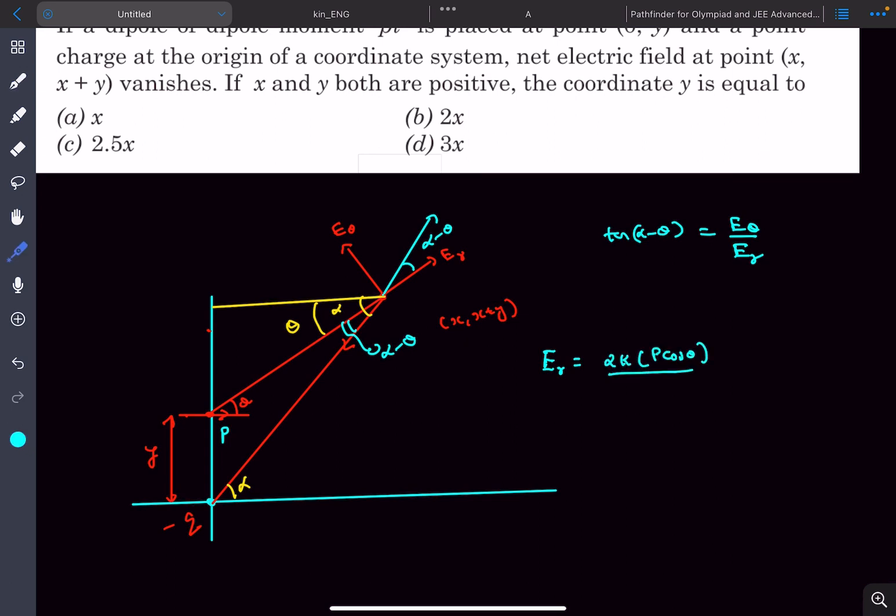Now what is the distance of the center of the dipole from this point? This point is 0, y and this point here is x, x plus y. So if you use distance formula, the distance between these two points is going to be root 2x. So this will be root 2x the whole cube. So this will be the electric field due to the radial component.